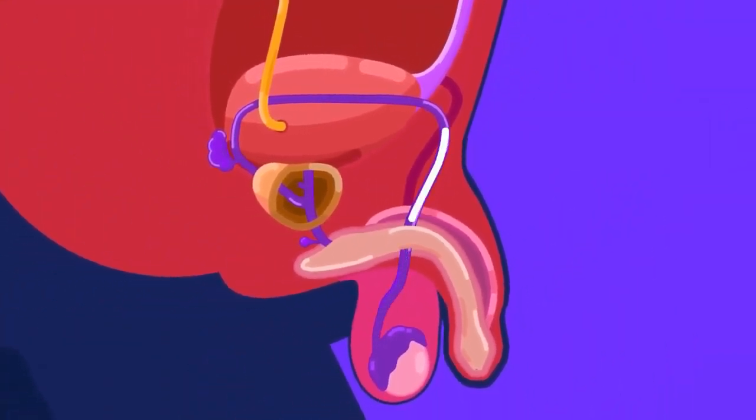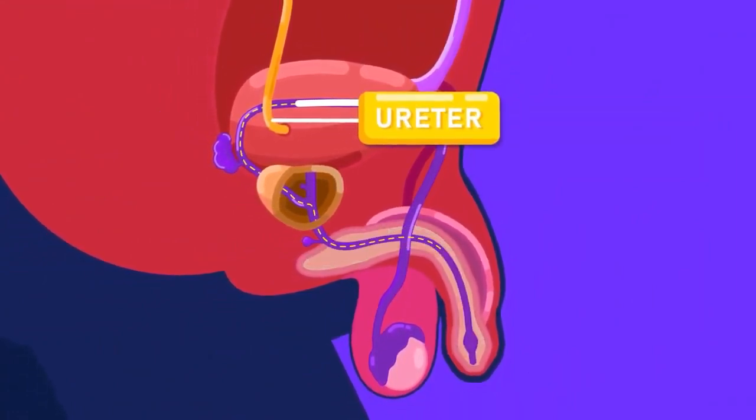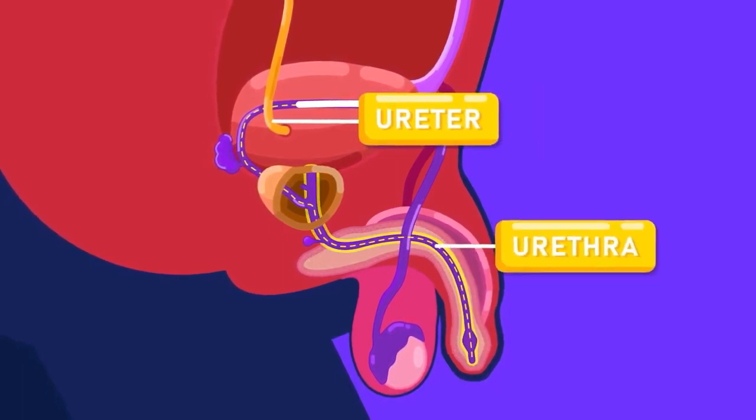The sperm duct from each side passes into the abdominal cavity. It loops over the ureter of that side and finally opens into the urethra.